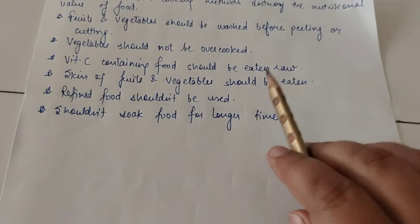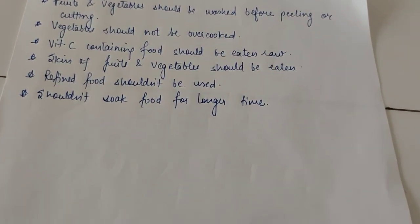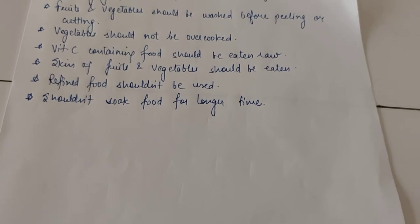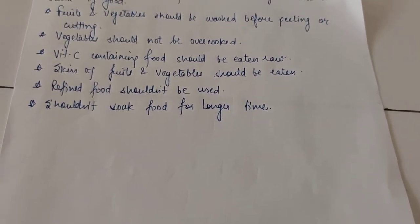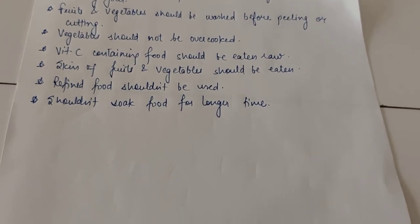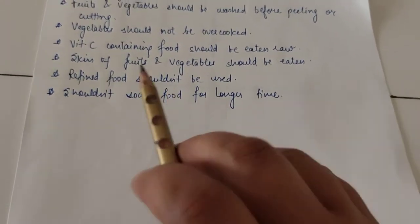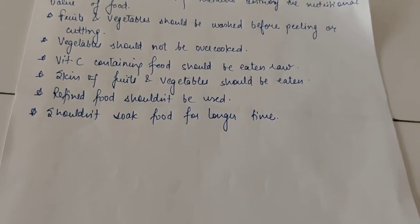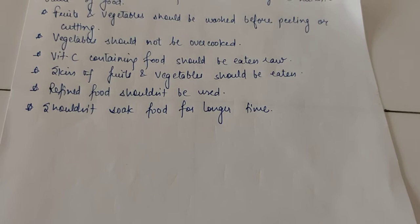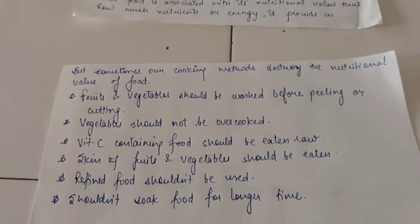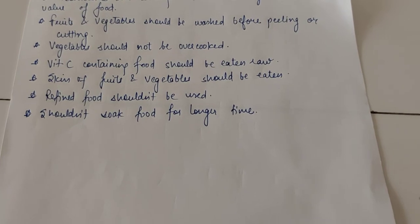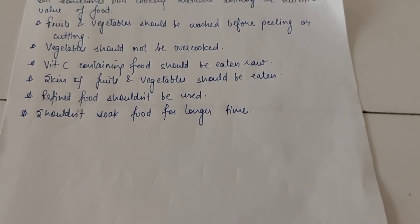The skin of fruits and vegetables should be eaten, as it provides roughage. Refined food like maida, which is refined flour, should not be used because its important nutrients have been removed during refining — maida contains very few nutrients. We also shouldn't soak food for a long time, because important nutrients will dissolve into the water and be washed away. We should take proper care while cooking to preserve the nutrition present in our food.